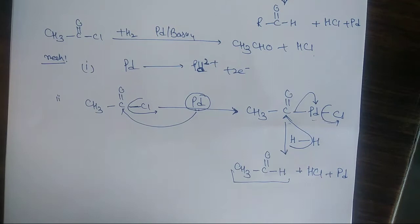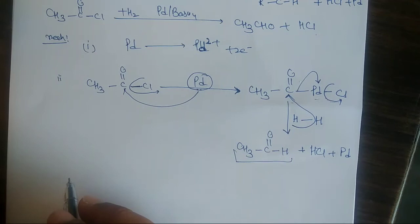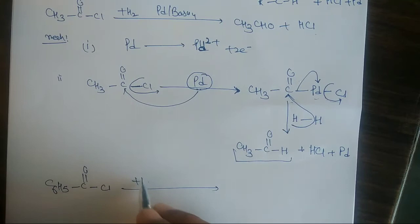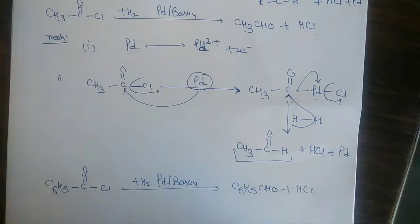One more example is here. If we talk about an aromatic aldehyde — like benzoyl chloride, that is C₆H₅ C double bond O and Cl — we will also add Platinum and BaSO₄. Therefore, we will get benzaldehyde with loss of HCl. Let's see the mechanism of this reaction.